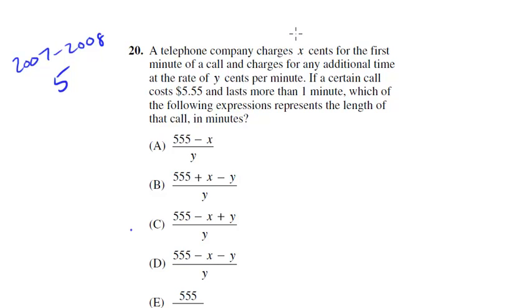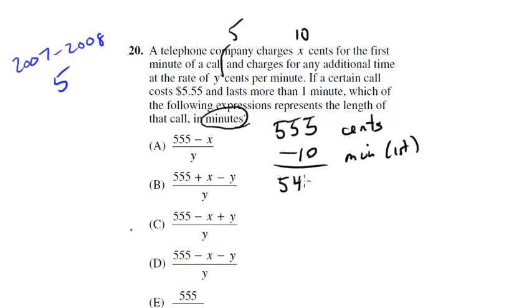A telephone company charges X cents for the first minute of a call, and charges for any additional time at the rate of Y cents per minute. Okay, so let's make this, I don't know, 10 cents for the first minute, and let's make Y five. Again, you can use your own numbers, it all should work out. If a certain call costs $5.55 and lasts more than a minute, which of the following represents the length of the call in minutes? So given our prices, let's find out how many minutes this person talked. Well, notice $5.55 is the same thing as 555 cents, right? So for the first minute, we subtract that off, costs 10 cents. And so the rest of the call costs 545 cents, and we know our rate was 5 cents per minute, so let's divide that by 5. So 545 divided by 5 is 109. And 109 plus 1, because for the first minute, is a total of 110 minutes. So we want to go to the choices using our numbers and find 110, and that will get us the answer.